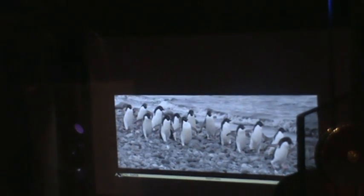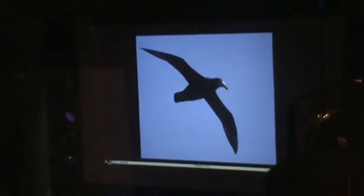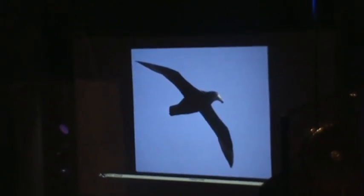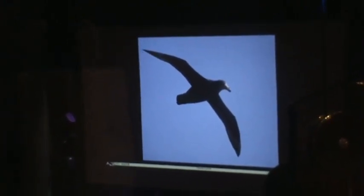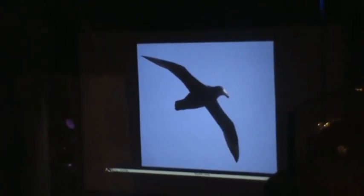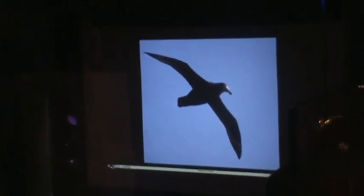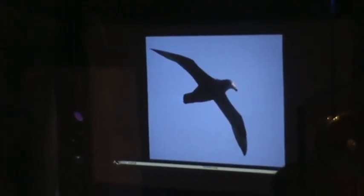Terns, the penguins of course, and the petrels and the albatrosses. All of these are types of seabirds, but they're not necessarily closely related to one another. It's just that they have all adapted to exploit the marine environment.